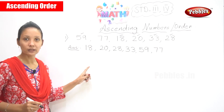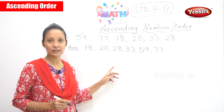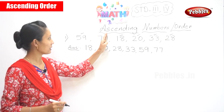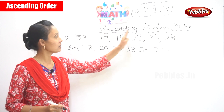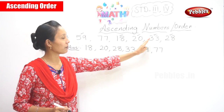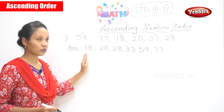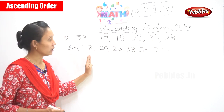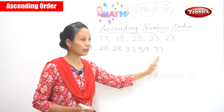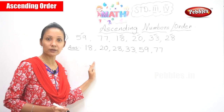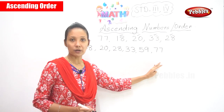Did you follow this, children? The ascending order, or ascending numbers, means from your smaller number to your greater number.